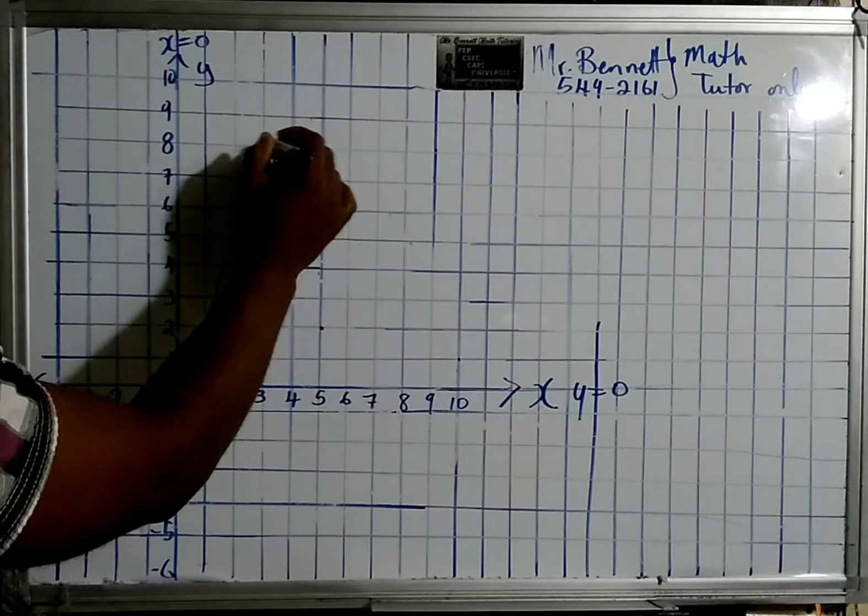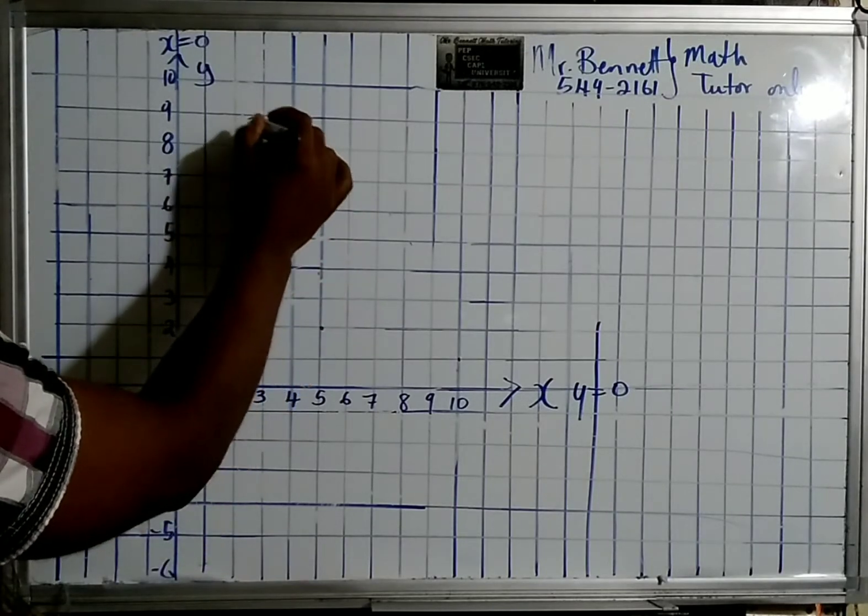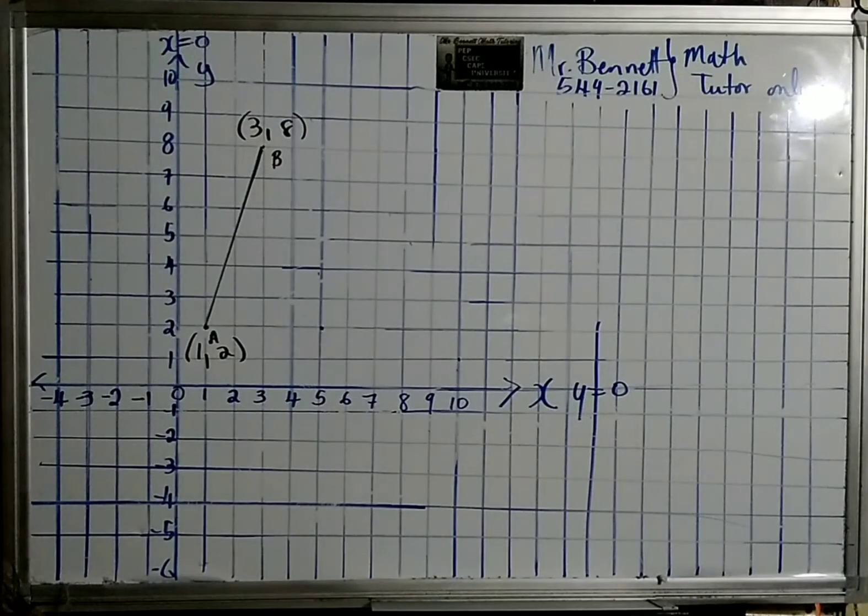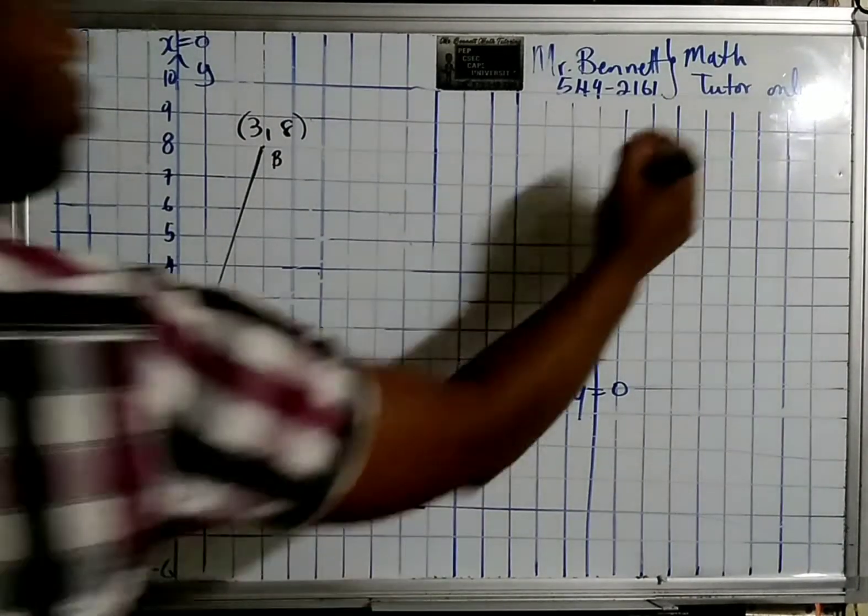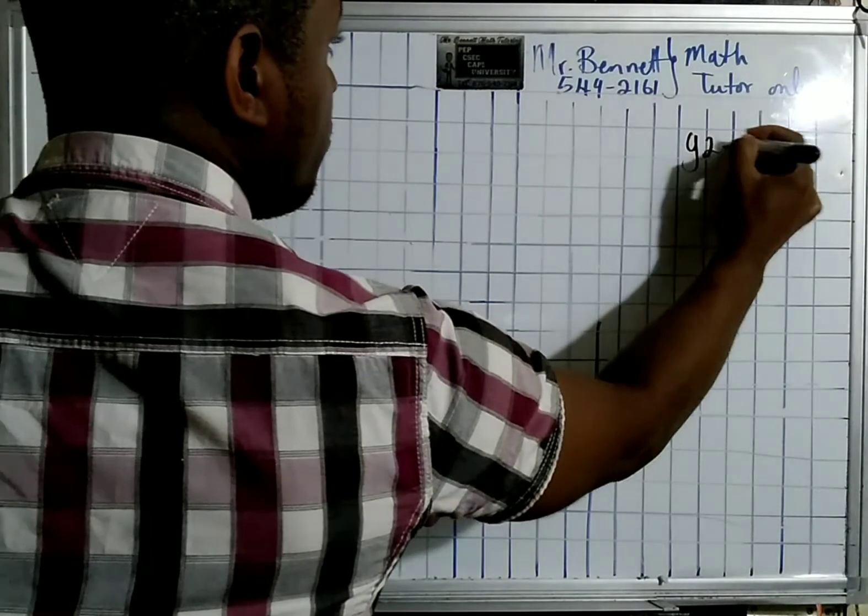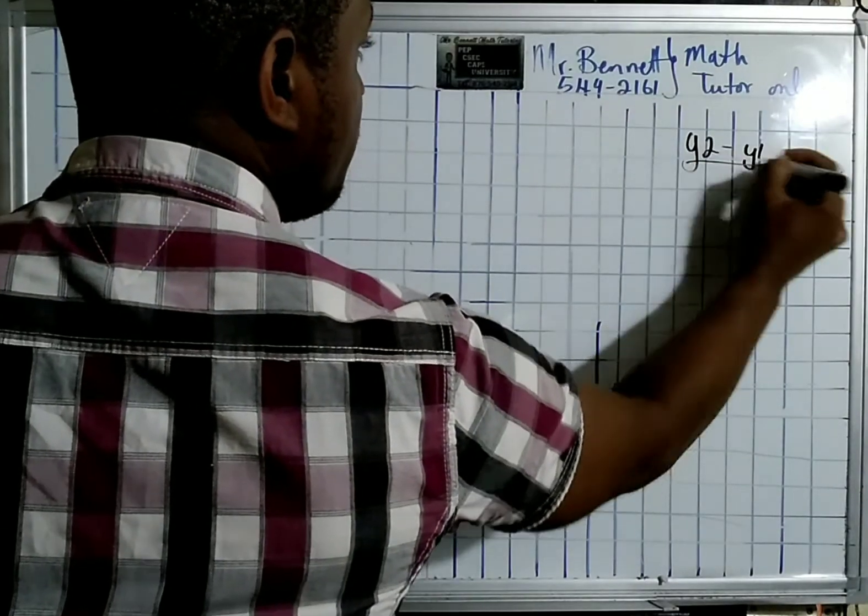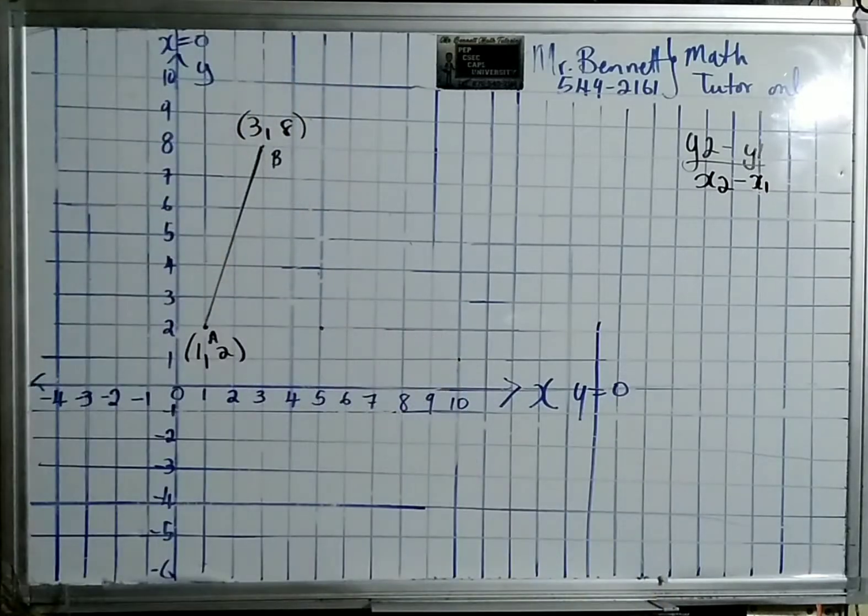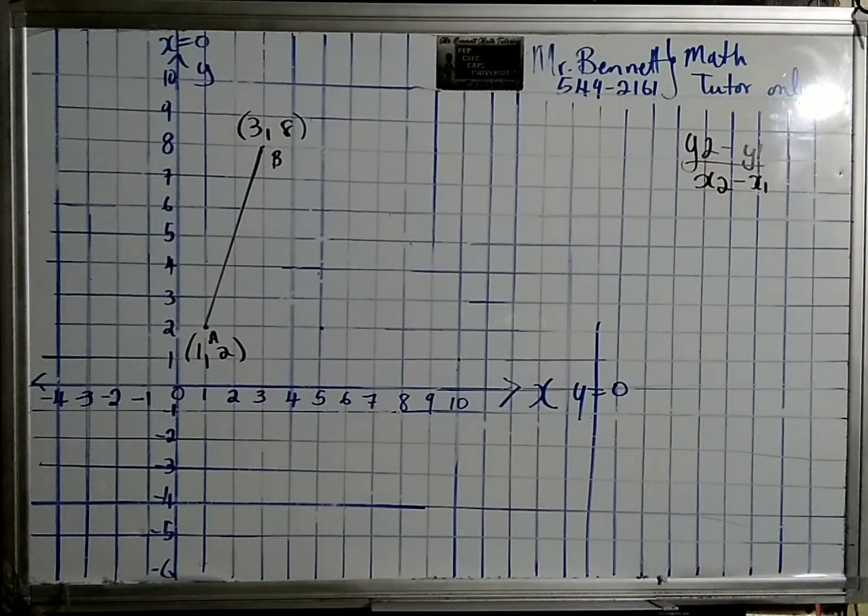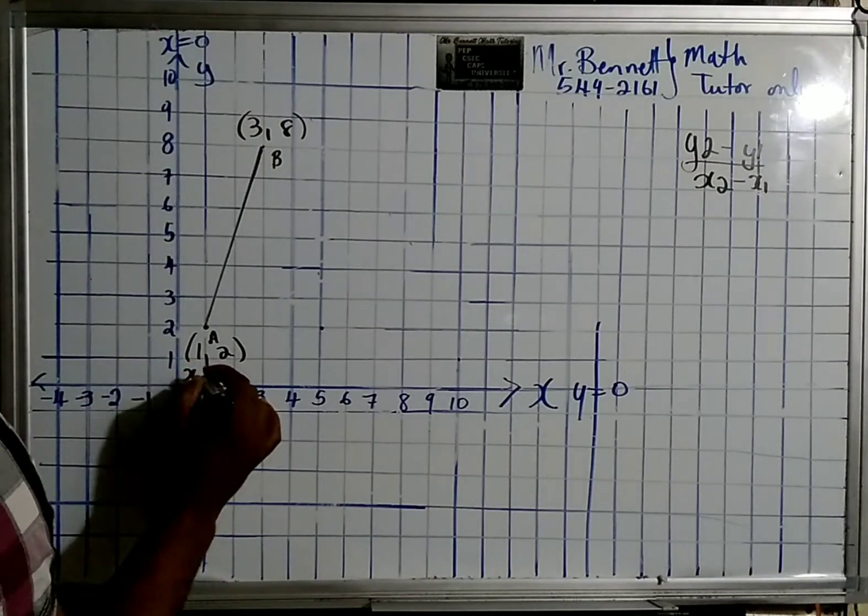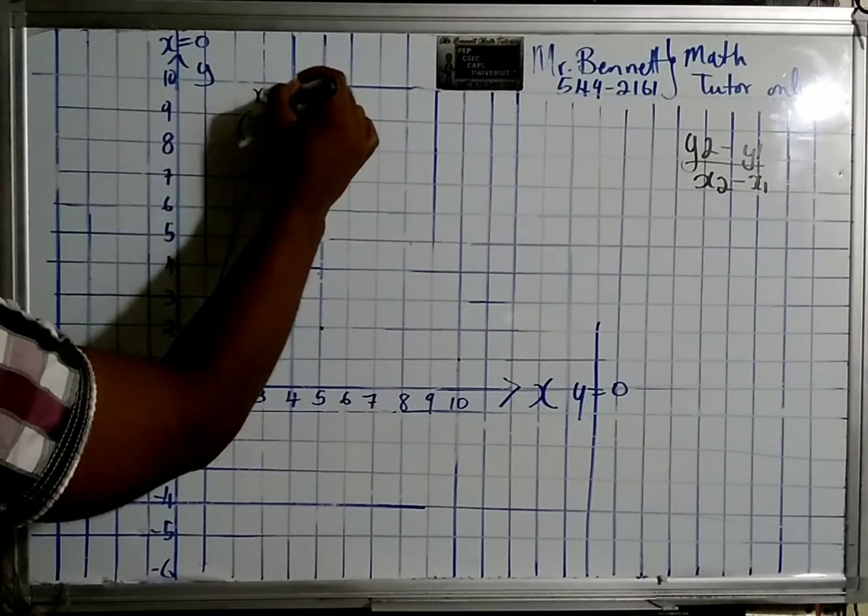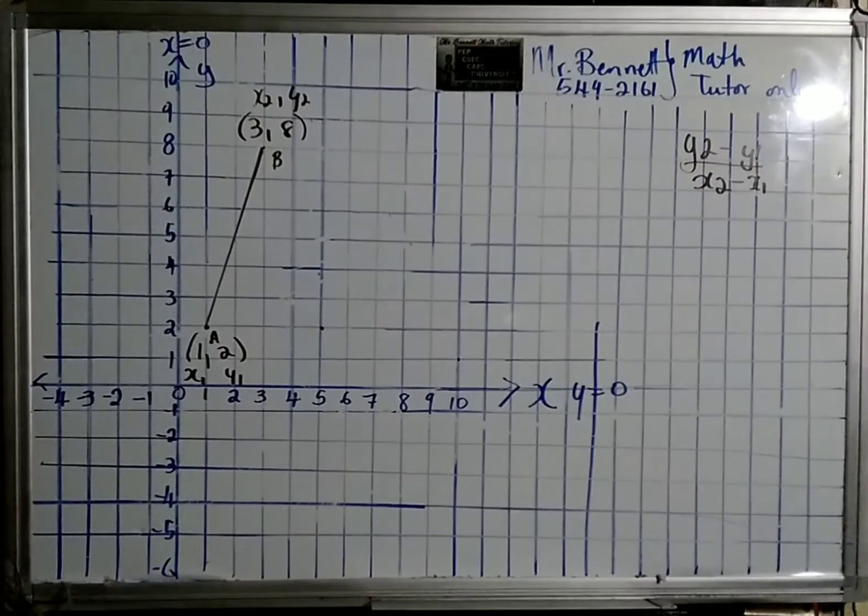The formula is y2 minus y1 divided by x2 minus x1. So it's rise over run, or the change in y over the change in x. We can label this x1, y1, and this would be x2, y2. For every coordinate, there's a point with x and y values.